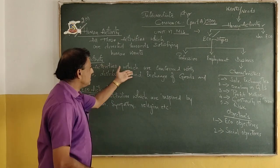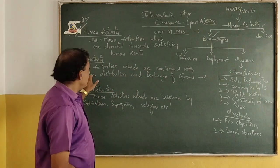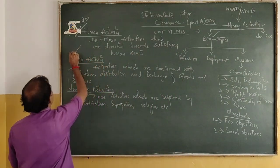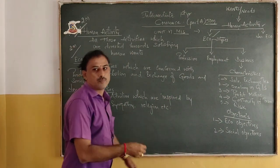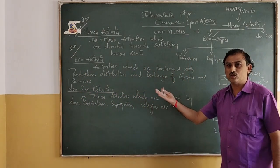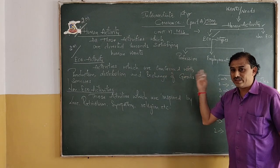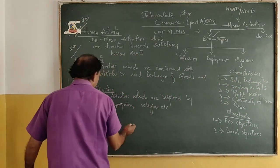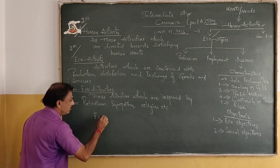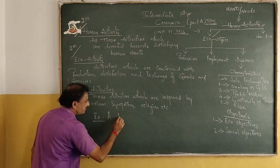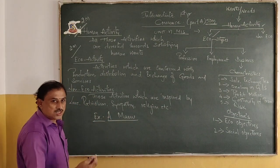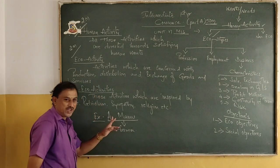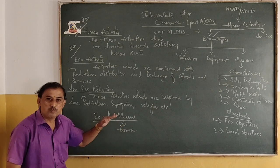Economic activities are nothing but those which are concerned with production, distribution and exchange of goods and services. This is also very important for your two-mark answer. What is economic activity? Economic activities are those activities which are concerned with production, distribution and exchange of goods and services. For example, take a manufacturer — suppose take a farmer. A farmer is called a manufacturer because he is producing rice.